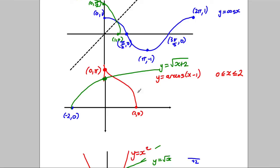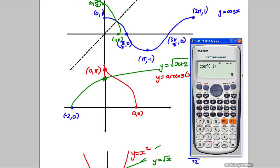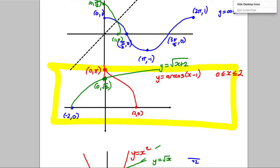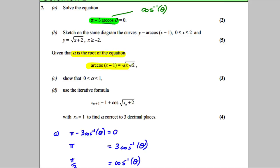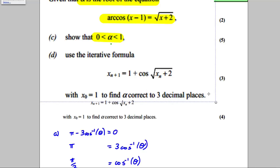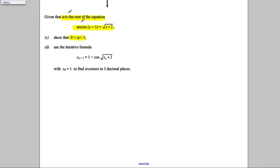When x = 0 on y = √(x + 2), we get y = √2 ≈ 1.41, which is less than π, so the point (0, √2) sits below (0, π) on our diagram. The sketch of both curves together forms our final answer for this part — everything else was working.